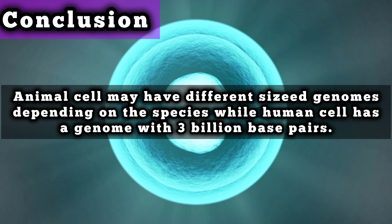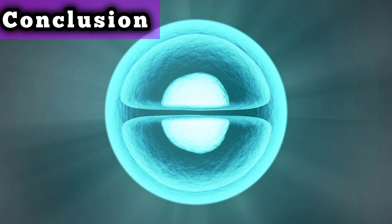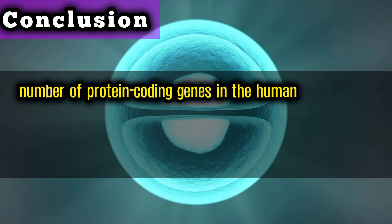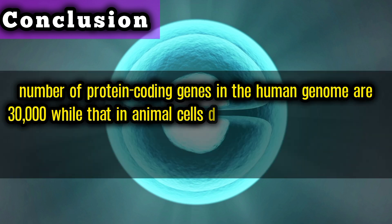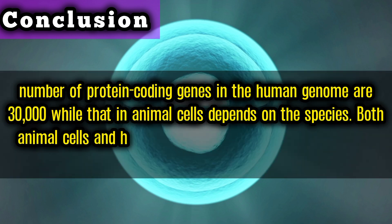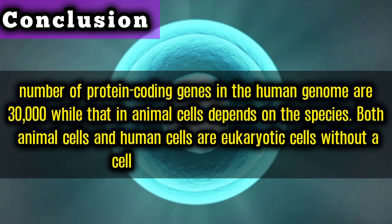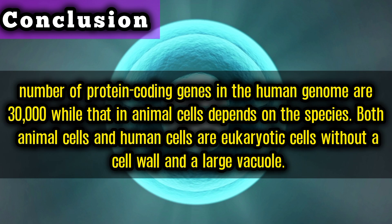Conclusion: animal cells may have different genome sizes depending on the species, while the human cell has a genome with 3 billion base pairs. The number of protein-coding genes in the human genome is around 25,000, while that in animal cells depends on the species. Both animal cells and human cells are eukaryotic cells without a cell wall and a large vacuole.